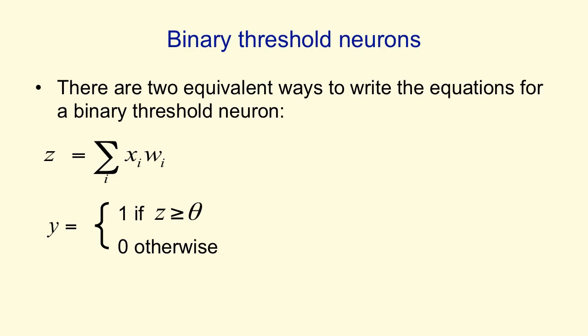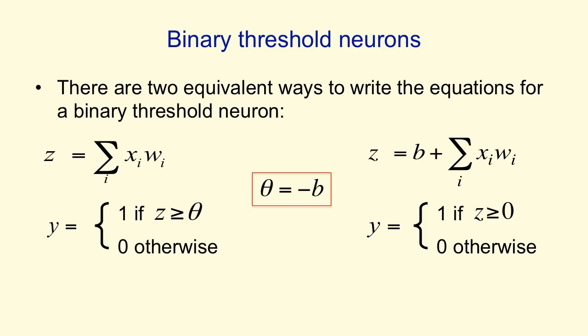Alternatively, we could say that the total input includes a bias term, so the total input is what comes in on the input lines times the weights, plus this bias term, and then we can say that the output is 1 if that total input is above 0, and is 0 otherwise. And the equivalence is simply that the threshold in the first formulation is equal to the negative of the bias in the second formulation.